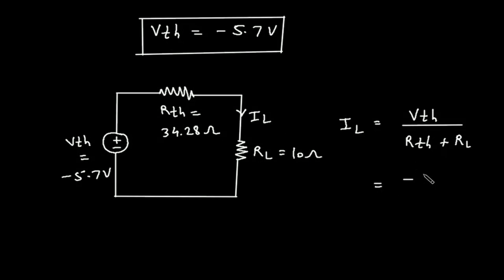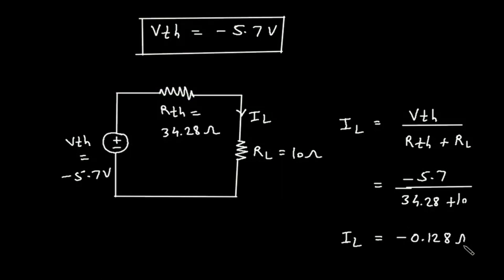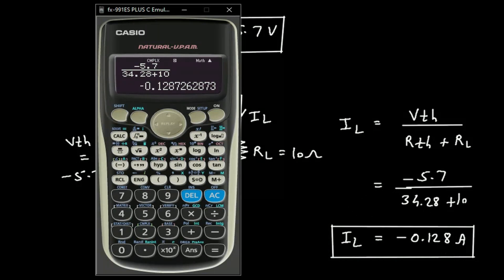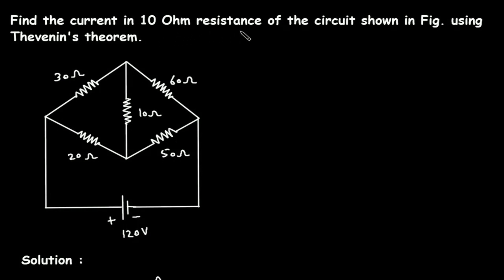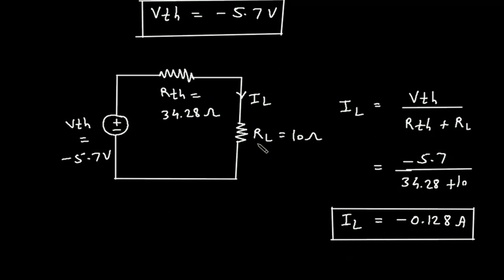IL = −5.7 / (34.28 + 10) = −5.7 / 44.28 = −0.128 ampere. This is the value for IL. The current through the 10 ohm resistance is IL = −0.128 ampere. This is the final answer.